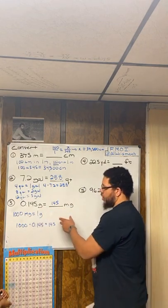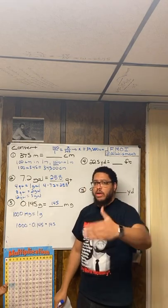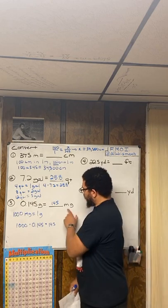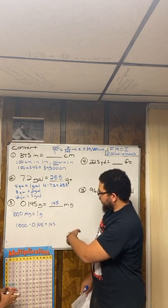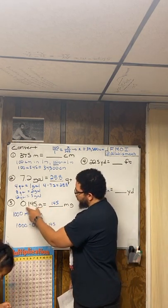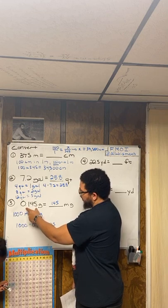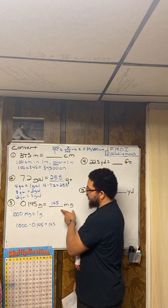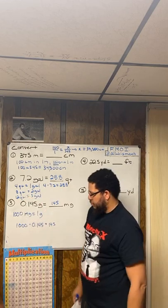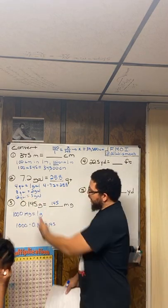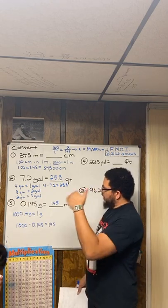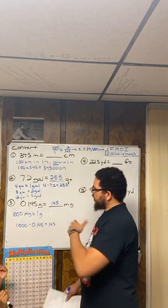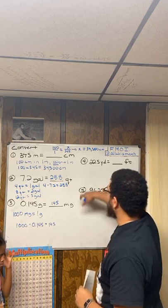A milligram is one thousandth of a gram — if you took a gram and cut it into a thousand equal pieces, each piece would be one milligram. So it makes sense that it takes more milligrams to equal fewer grams. This is 0.145 grams — not even a whole gram — so it makes sense that it takes 145 milligrams to equal that amount. Once the math starts making sense, the formulas don't feel so overwhelming.